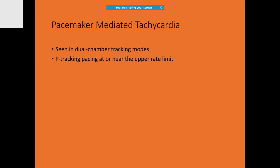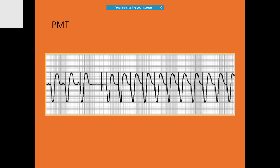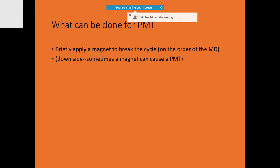Pacemaker-mediated tachycardia (PMT) is mostly seen in dual-chamber tracking modes where P-tracking pacing is at or near the upper rate limit. The patient may have palpitations or hypotension. It occurs due to loss of atrial capture or a PVC, and retrograde conduction of the impulse causes atrial depolarization. If PMT is occurring, immediately apply a magnet.